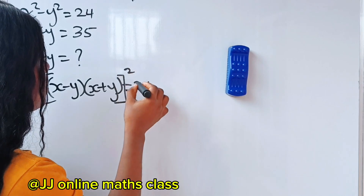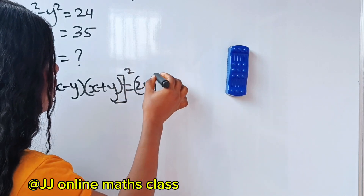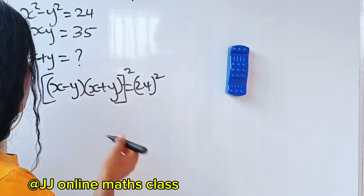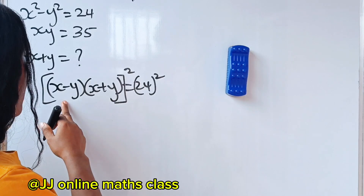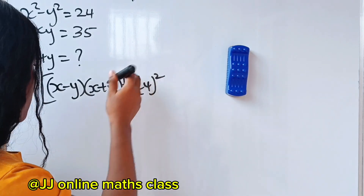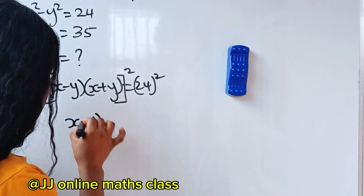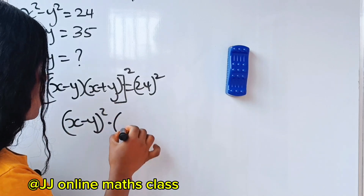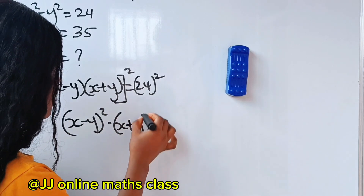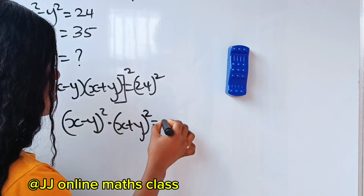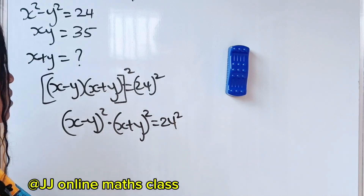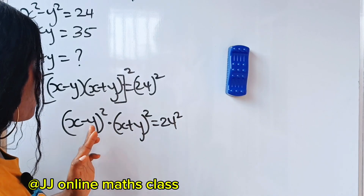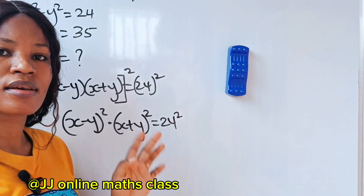Now let's square both sides of this equation. If we do that, we get x minus y squared, multiplied by x plus y squared, equals 24 squared.